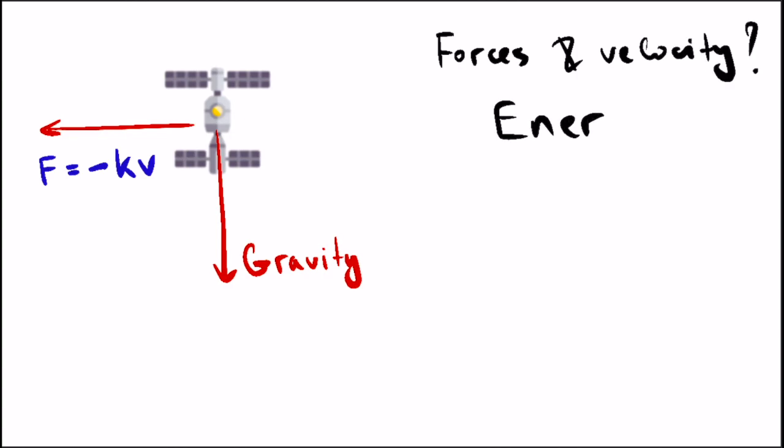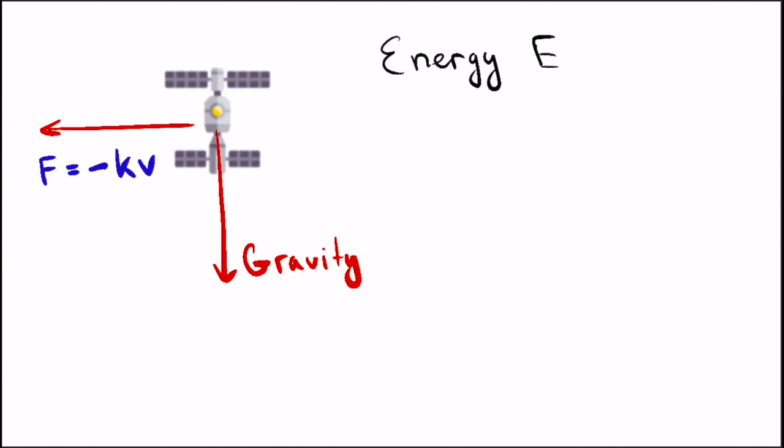I will use energy considerations to demonstrate a positive change in the speed of the space station. In our system, the energy is not constant, because air friction takes it away.